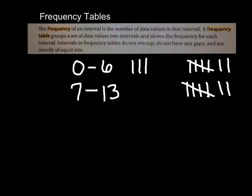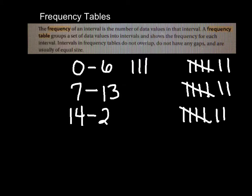If we needed to go more, we would start with 14 and count up 7 numbers including 14: 14, 15, 16, 17, 18, 19, 20. So 14 to 20 would be our next interval. You have to be very careful, because it looks like 6 numbers, but there are actually 7 numbers in each of these intervals.